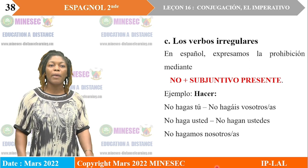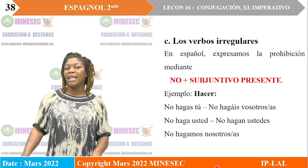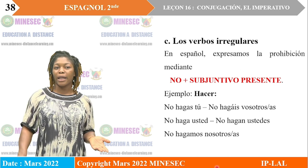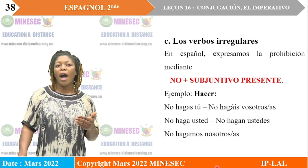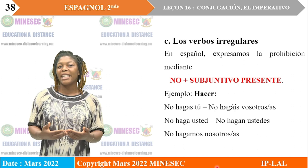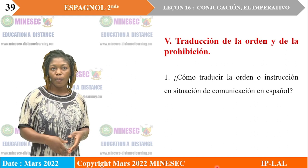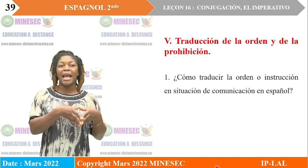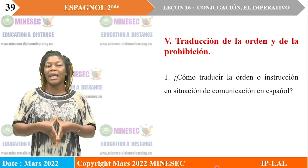Vamos a pasar a los verbos irregulares en español. Expresamos la prohibición mediante no más presente de subjuntivo. Ejemplo de un verbo irregular, hacer: no hagas tú, no hagamos nosotros, no hagáis vosotros o vosotras, no hagan ustedes. Hemos acabado con el imperativo afirmativo y el imperativo negativo.